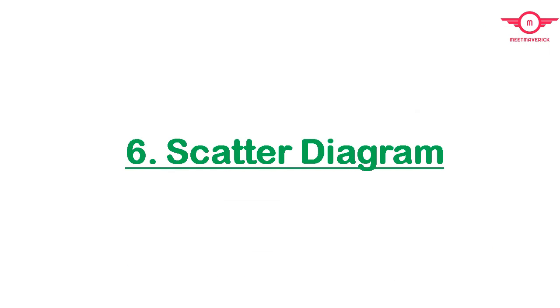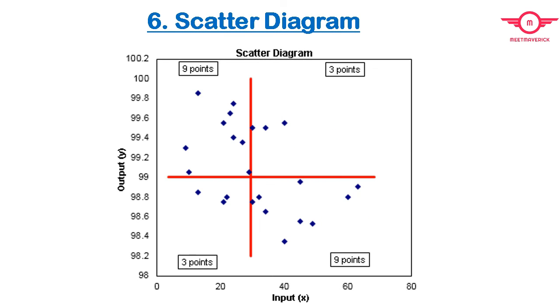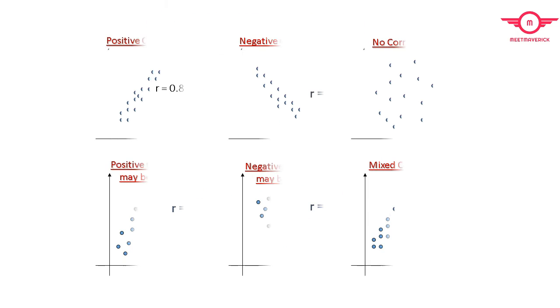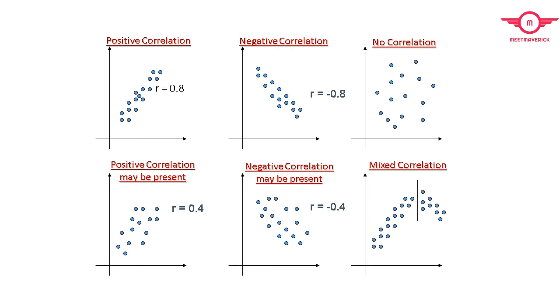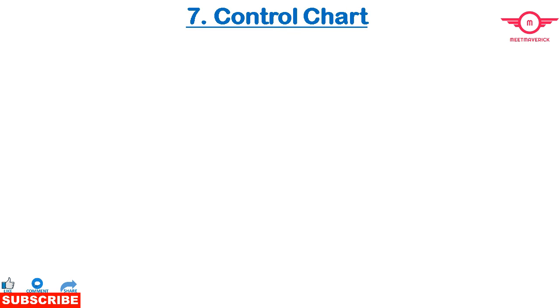The Scatter Diagram is used to represent the relationship between two variables. The first variable is on the X-axis and the other is on the Y-axis. The relationship can be linear, curvilinear, exponential, logarithmic, quadratic, polynomial, and so on.